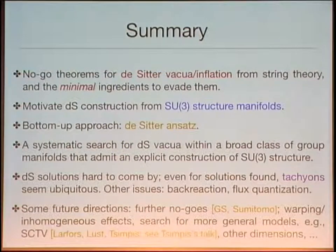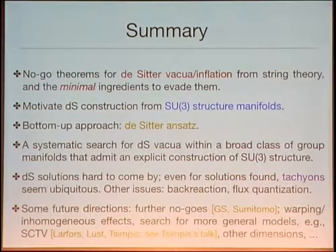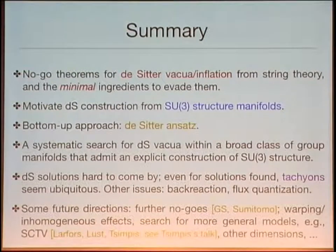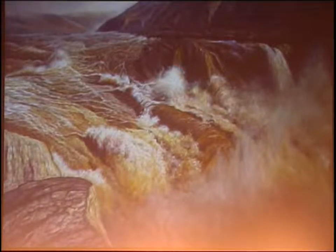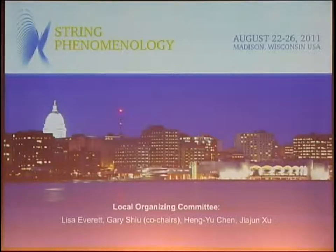To summarize: I have presented some no-go theorems for de Sitter space. These no-go theorems also point us to a set of minimal ingredients for constructing simple de Sitter solutions. We have carried out a systematic search based on a universal ansatz that allows us to scan a large number of models. But so far, de Sitter vacua have been elusive. Perhaps the main message is that the landscape, as seen from an impressionistic point of view, may be very different from that seen through an explicit lens. Regardless of how the landscape actually might look, the cosmological constant problem has clearly put string theory in a rather unique position to make contact with phenomenology. String phenomenology will be held in Madison, Wisconsin, in August this year, and we really hope to see you there. Thank you for your attention.